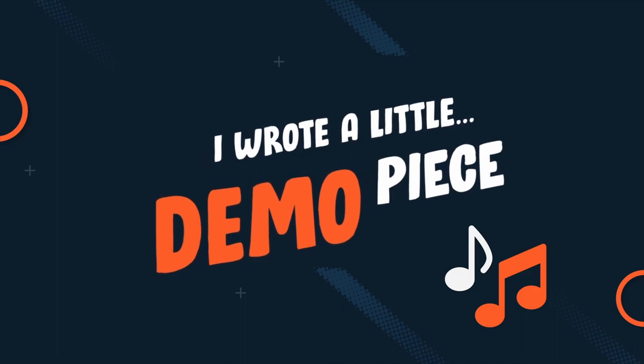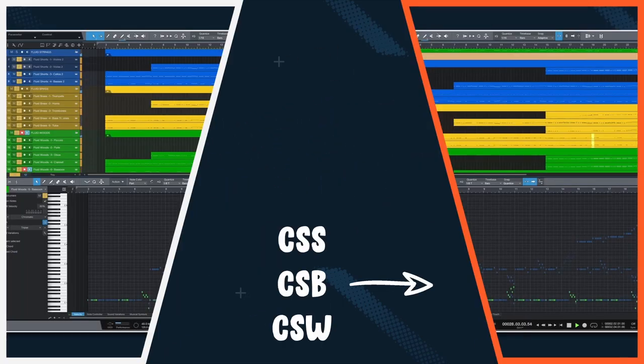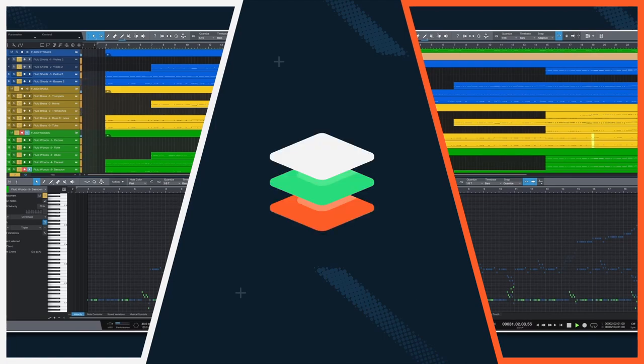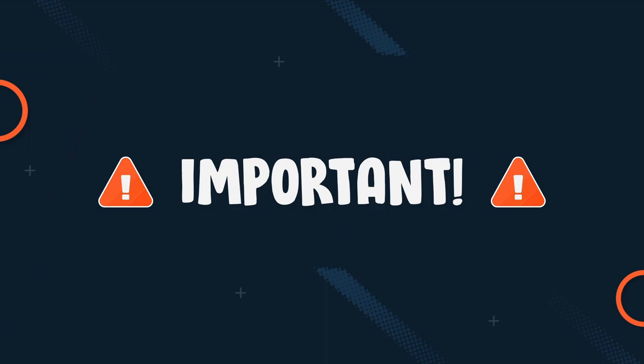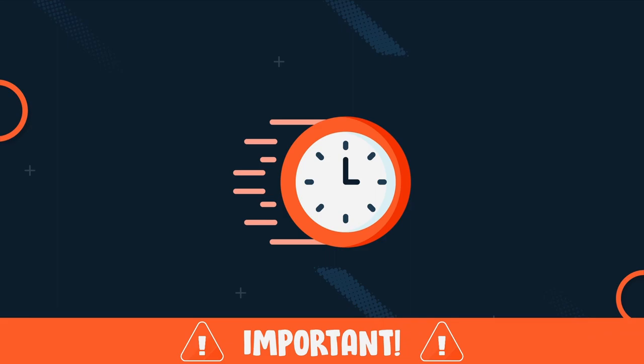I wrote a little comparison demo piece. I will play it once with the Fluid instruments and once with my trusty workhorse's Cinematic Studio Strings, brass and woodwinds. Finally, we'll layer them. Fluid Shorts are about convenience and speed — I didn't adjust any articulations because it does it for me. That's why for the Cinematic Studio series, I also picked only one short articulation. That would have probably taken an hour or more, and I want to show the results you can get with a comparable time effort.